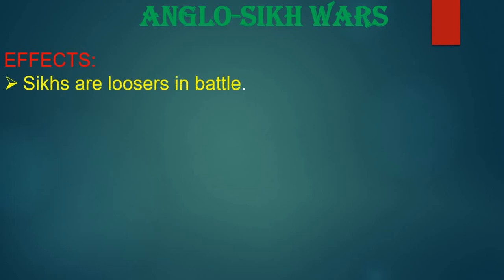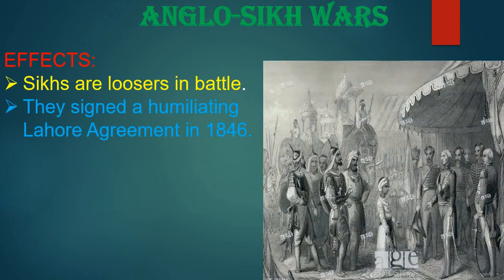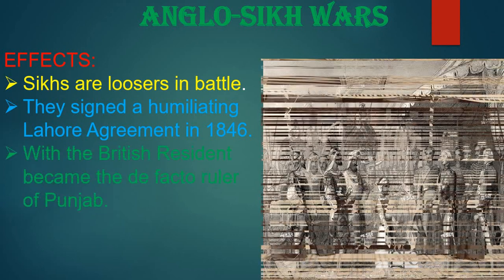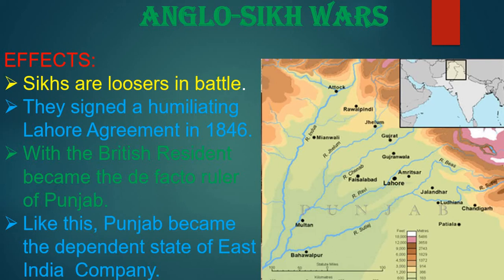The effects of the first Anglo-Sikh War: the Sikhs were the losers in the battle. They signed the humiliating Lahore Agreement in 1846, and the British Resident became the de facto ruler of Punjab. Punjab became a dependent state of the East India Company.